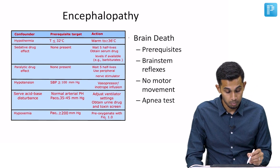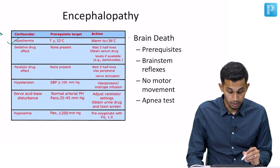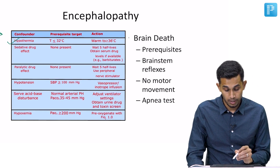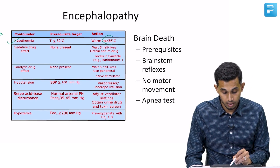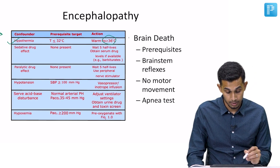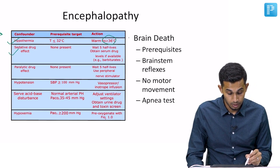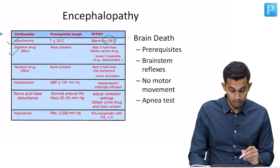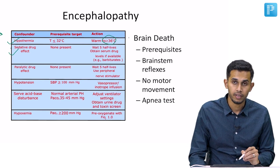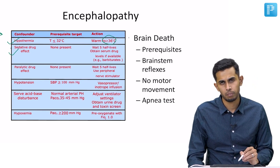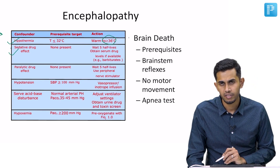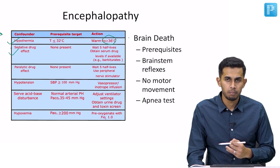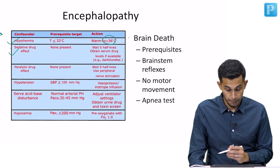What are the confounders for brain death? One is hypothermia. We have to make sure that the body temperature is at least above 36 degrees Celsius. Next, there should not be any sedative drug effect. If the patient was on benzodiazepines, then we have to wait at least five half-lives of benzodiazepines before confirming the patient is brain dead.